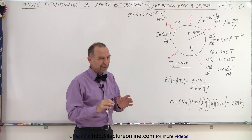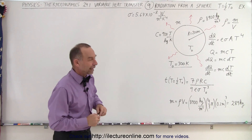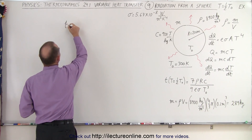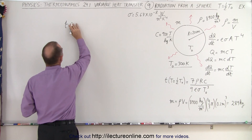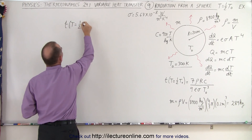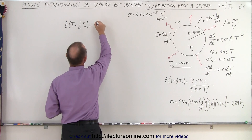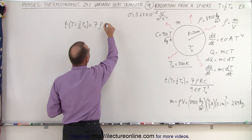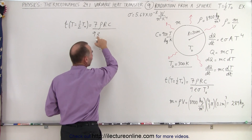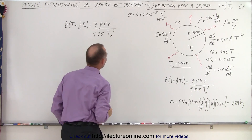The results, because I've already worked it out in advance, are quite remarkable. So let's plug this in. The temperature as a function — we want to find when temperature equals one half of its original temperature — using the equation: seven times the density times the radius times the specific heat, divided by nine times the emissivity, times the Stefan-Boltzmann constant, times the original temperature to the third power.